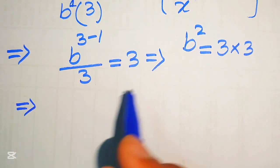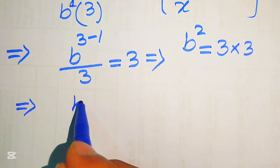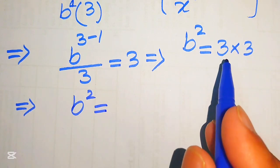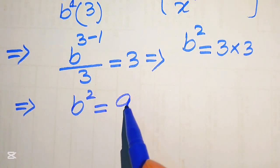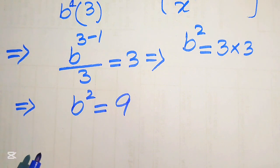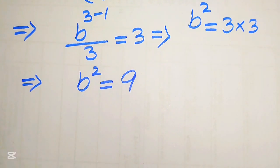So in the next step we obtain b squared equals 9. Now to find the value of b, we have two methods to solve this equation.